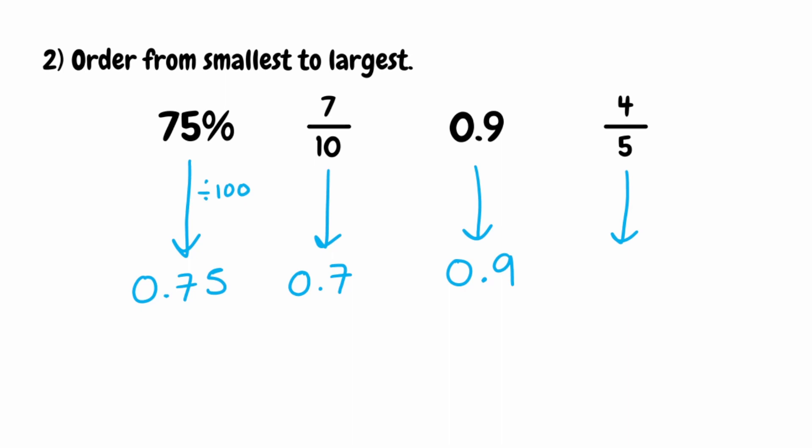And then finally, 4 fifths. We might know the unit fraction of 1 fifth as a decimal, or we could do 4 divided by 5. But first, I'm going to find an equivalent fraction to make the division quicker. Multiplying top and bottom by 2, 4 fifths is equivalent to 8 tenths. Then 8 divided by 10 moves the digits one place to the right, giving us 0.8.